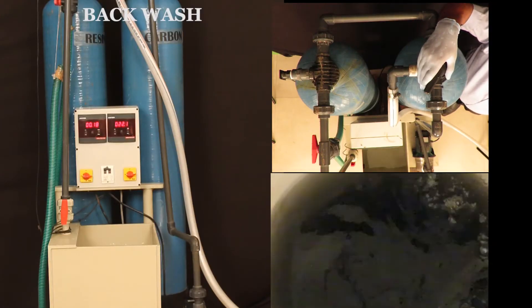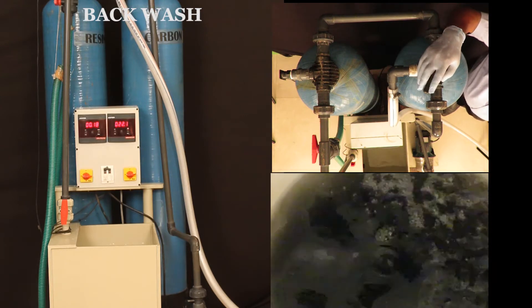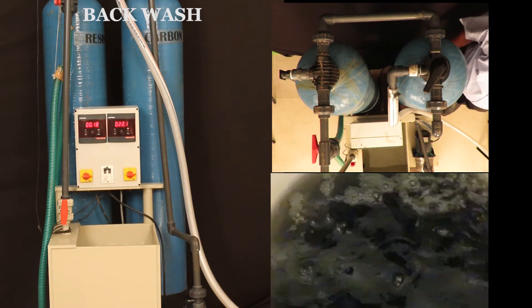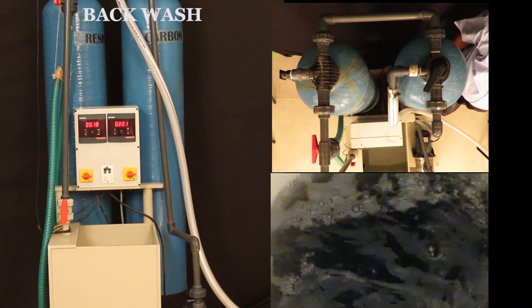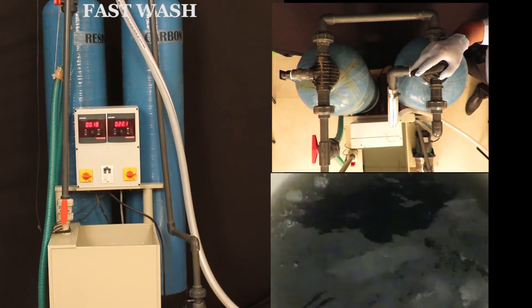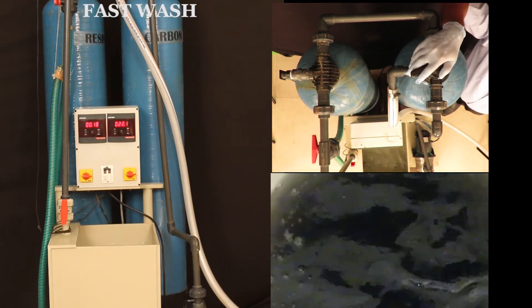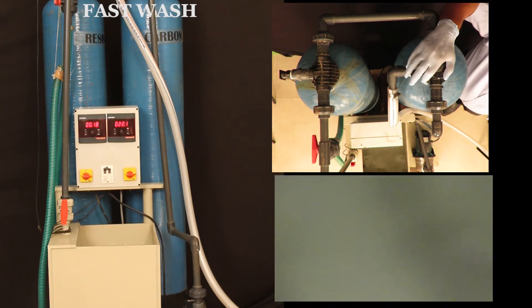Before starting the rinsing process, you should do a back wash for one and a half to two minutes, then fast wash for 30 seconds to one minute. Drain the water which is coming out from the hose pipe directly into a basin. As you can see in the video, water coming out from the pipe is quite oily and blackish. Repeat the process 8 to 10 times until the water comes out clean.